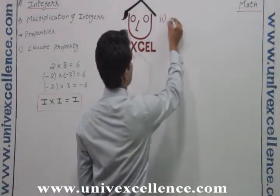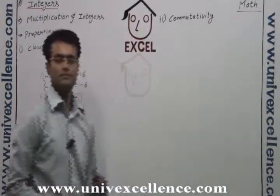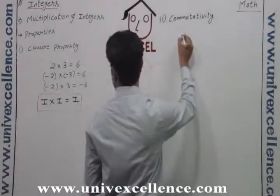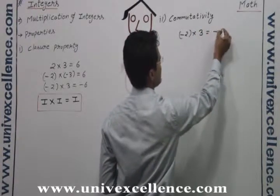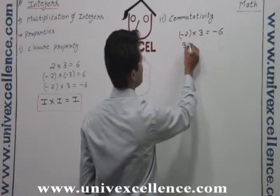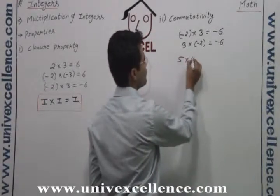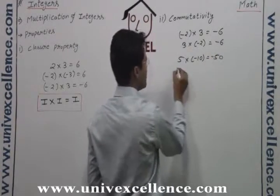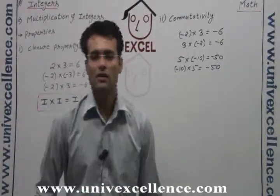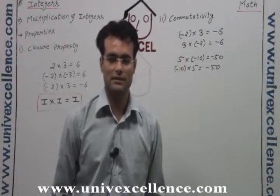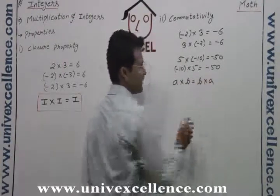What about commutativity? Minus 2 into 3 is minus 6, and 3 into minus 2 is also minus 6. 5 into minus 10 equals minus 50, and minus 10 into 5 is also minus 50. Whatever the order of multiplication, we get the same answer. So we can say that commutativity is followed by the multiplication of integers.